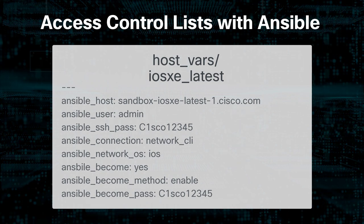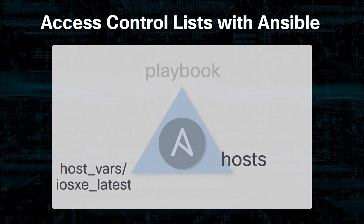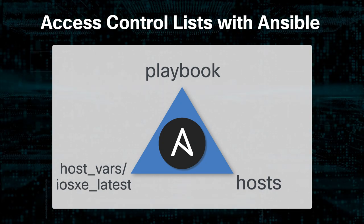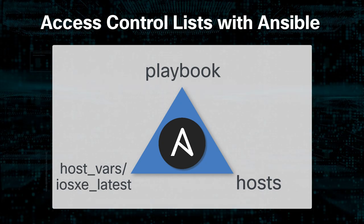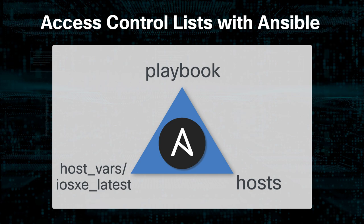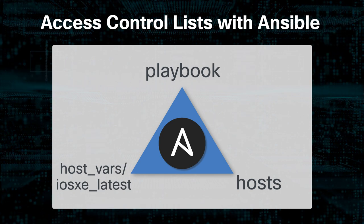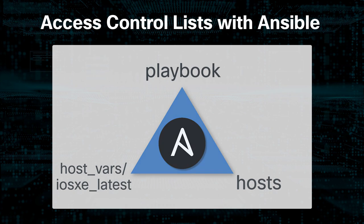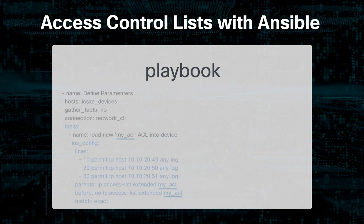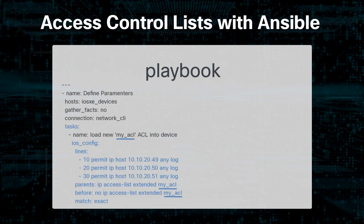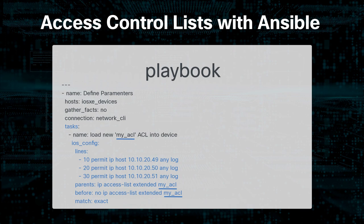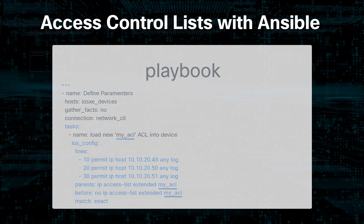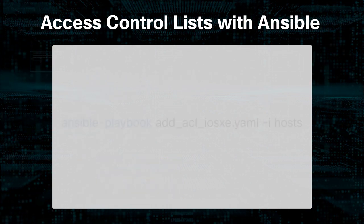The third file is the playbook. A playbook is the main means of Ansible automation. Each playbook is a collection of tasks, and each task is a collection of modules. Playbooks are written in YAML, which is intuitive and human readable — space indentation is important. Here is our playbook, which we've named add_acl_ios_xe.yaml.